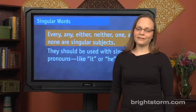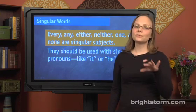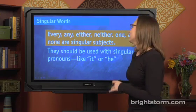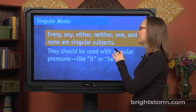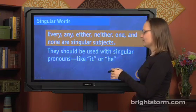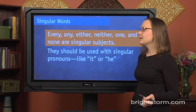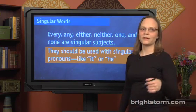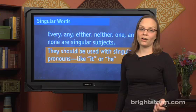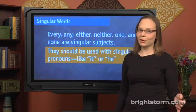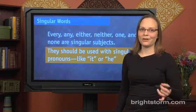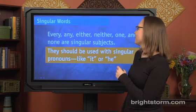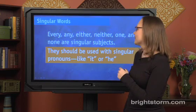The first new rule is that certain words may not seem singular, but they are. Those are every, any, either, neither, one, and none. Because they're singular, they need to be used with singular pronouns like it or he, depending on context. You can't use them with plural pronouns. This will make the most sense in the context of some examples, so let's see.